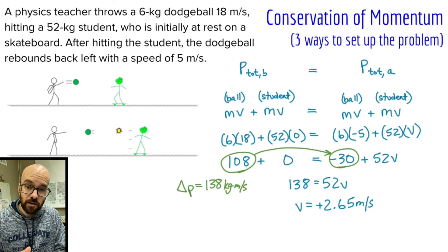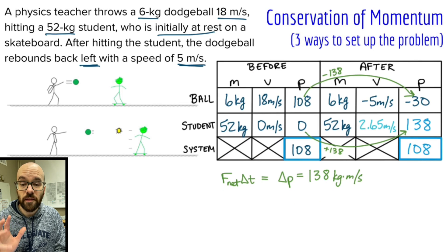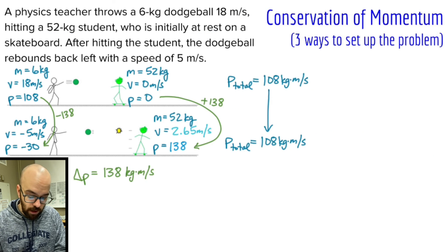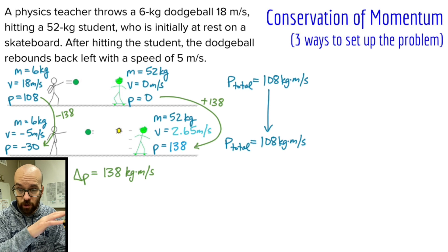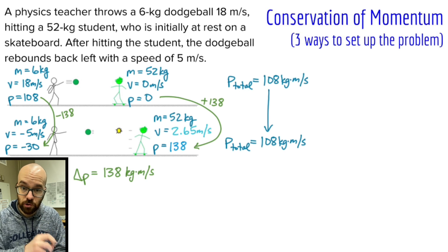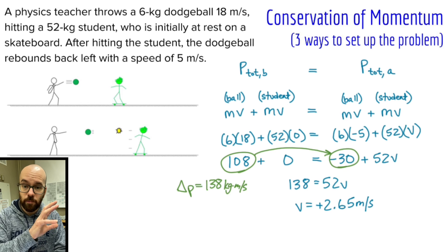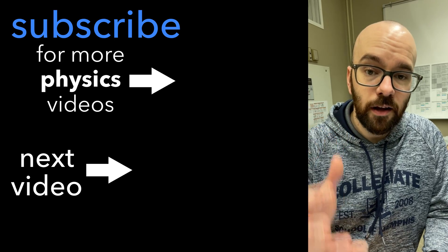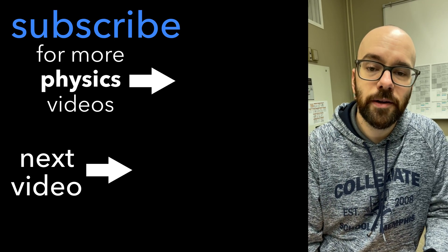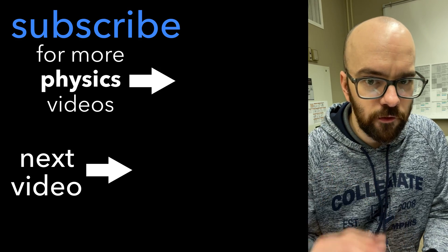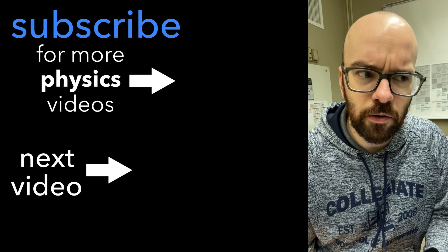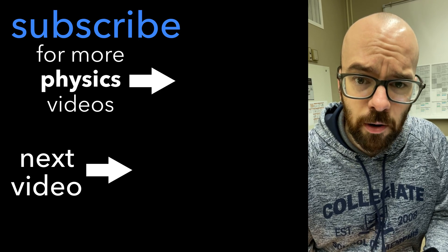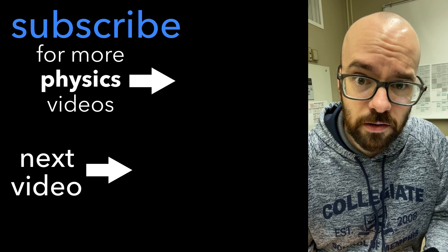Those are three different ways to set up a conservation of momentum problem: the table, which is a great organizational approach; labeling directly on the before and after pictures; and the one big equation method where you write P total before equals P total after, substitute all known values, and solve for the unknown. Thanks for watching, and good luck applying conservation of momentum to some problems. Watch out for evil physics teachers throwing bowling balls at students on skateboards — stay safe out there.